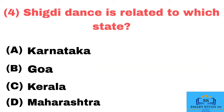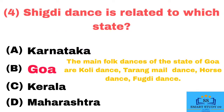Q4. Chigdi dance is related to which state? Answer: Goa. The main folk dances of the state of Goa are Kohli dance, Tarang male dance, Horse dance, and Fagdi dance.